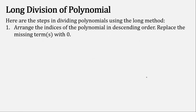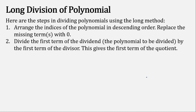Here are the steps in dividing polynomials using long division. First, arrange the indices of the polynomial in descending order, replacing any missing terms with 0. Next, divide the first term of the dividend by the first term of the divisor — this gives the first term of the quotient.